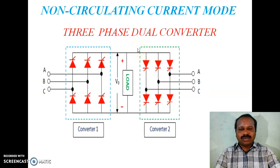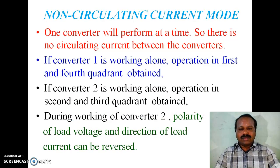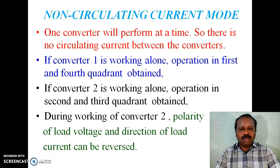A diagram also shows a three-phase dual converter in non-circulating current mode. In non-circulating current mode, one converter operates at a time, so there is no circulating current between converters. After commutation of the first converter, only then the second converter is turned on. If Converter 1 works alone, operation in the first and fourth quadrant is obtained. If Converter 2 works alone, operation in the second and third quadrant is obtained. During operation of Converter 2, the polarity of load voltage and direction of load current can be reversed.